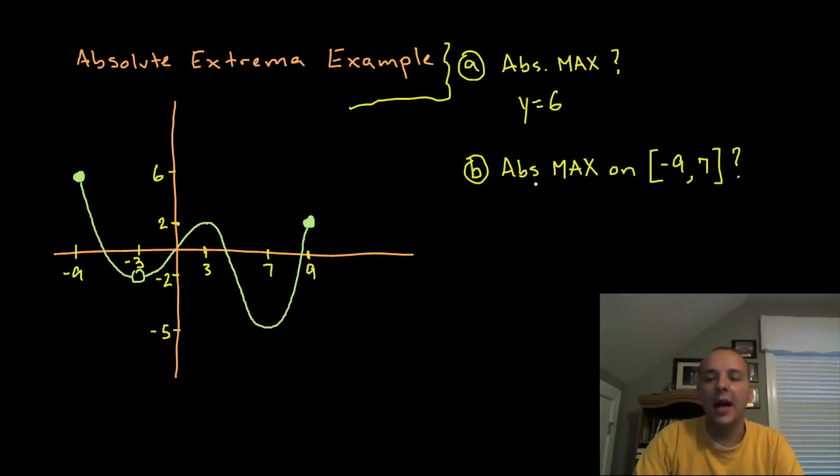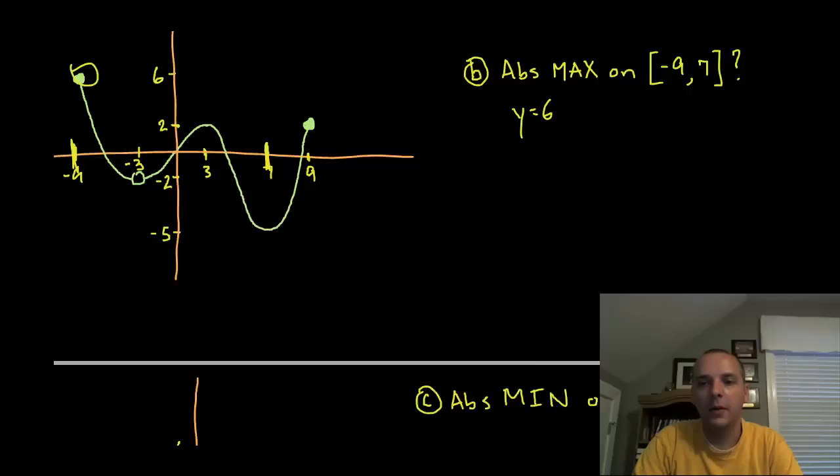Now the absolute maximum specifically on the interval negative nine to seven. Negative nine to seven, so if I only look on this window here, well that would also be six because that point is within that closed interval there.